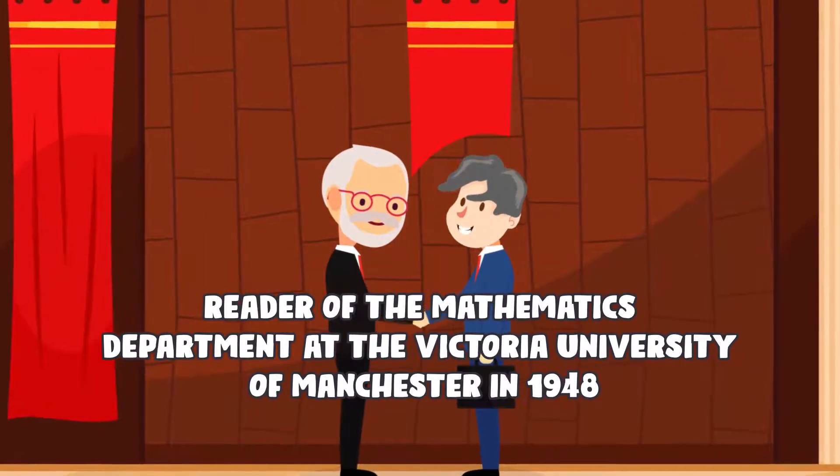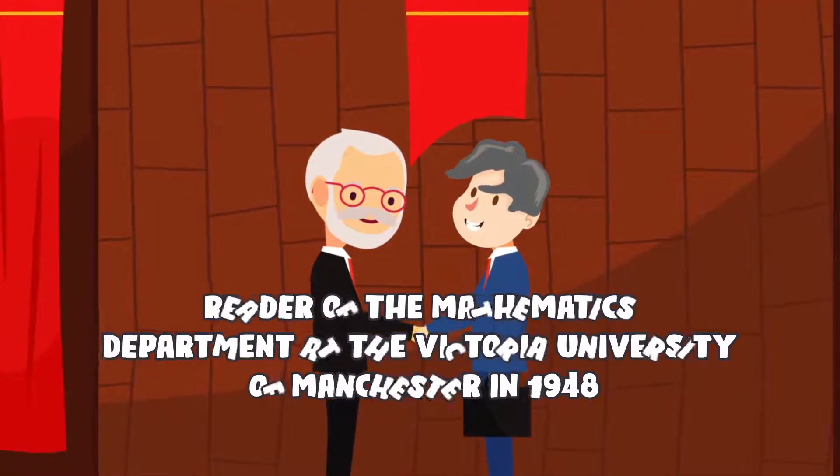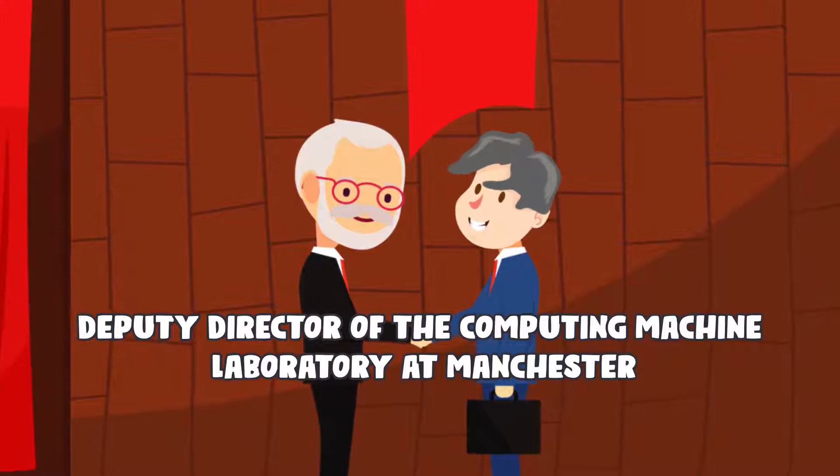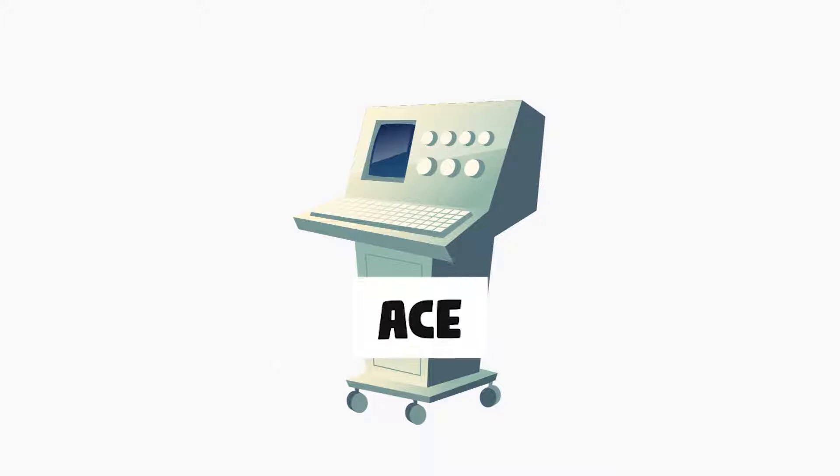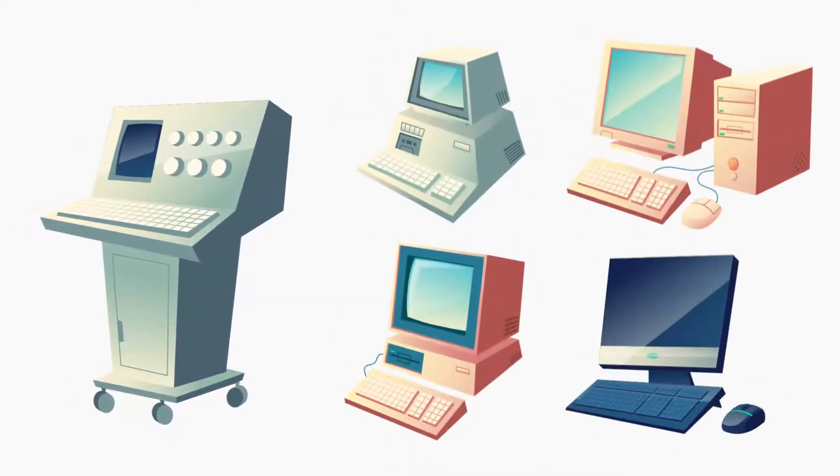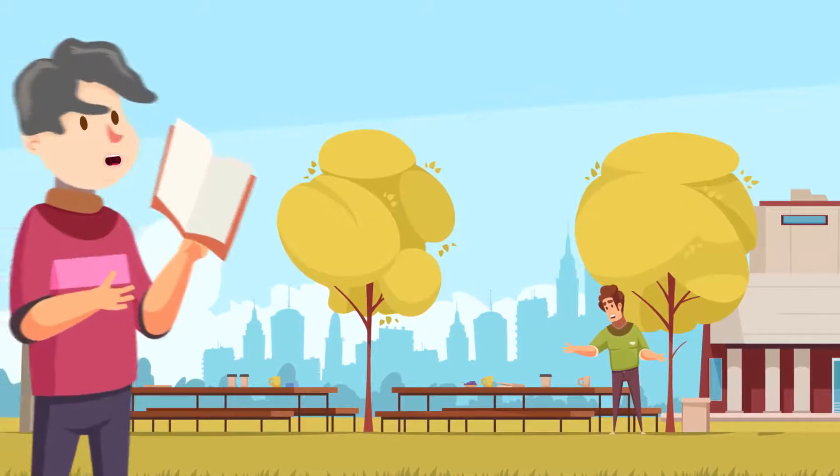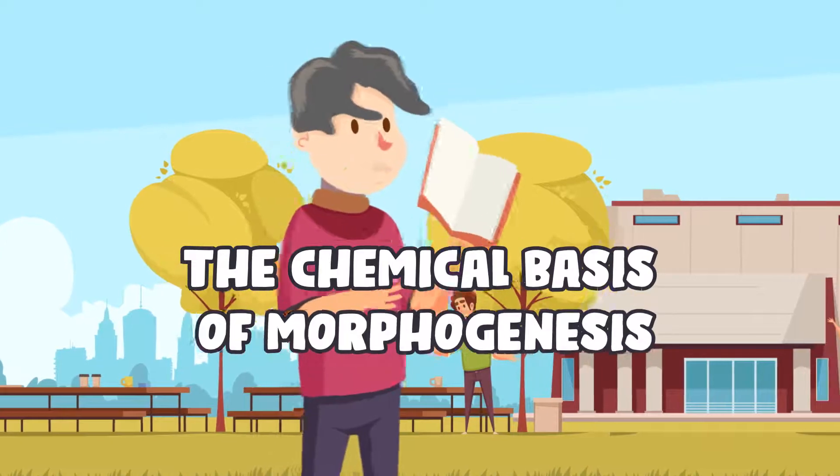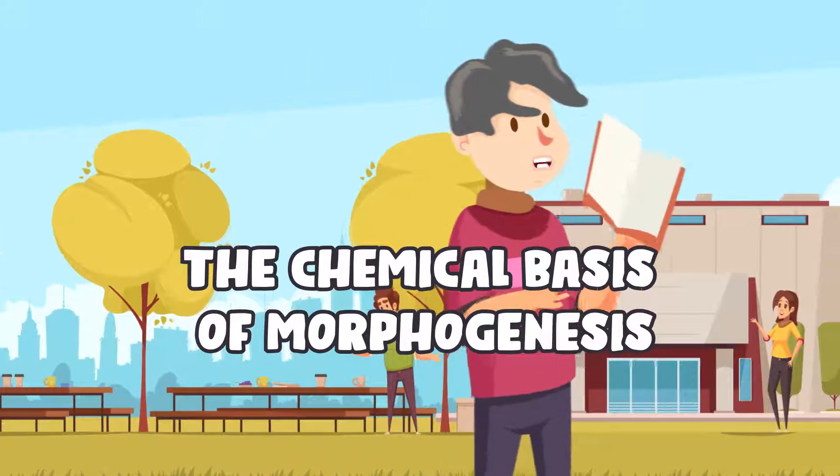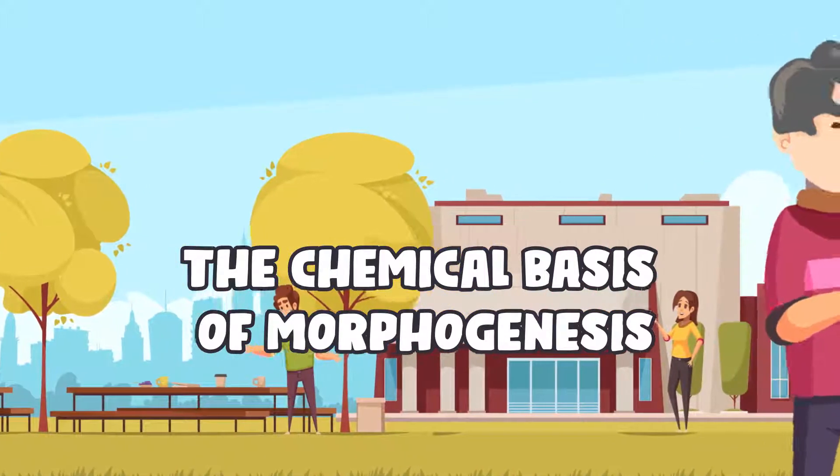Alan was appointed reader of the mathematics department at Victoria University of Manchester in 1948. The next year, he was made the deputy director of the Computing Machine Laboratory at Manchester. His Pilot ACE was built in his absence and executed in 1950, May 10. From this, several other computers around the world were built. In 1951, when Alan was 39, he turned his attention to mathematical biology and got his work, The Chemical Basis of Morphogenesis, published, which was considered his best work and masterpiece and remains relevant today as a seminal piece for mathematical biology.